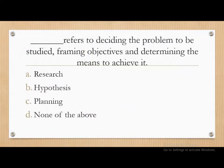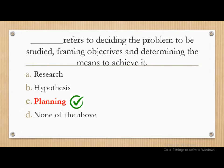Dash refers to deciding the problem to be studied, framing objectives, and determining the means to achieve it — whether it is research, hypothesis, planning, or none of the above. The correct answer is planning. Research planning refers to deciding the problem to be studied, framing objectives, and determining the means to achieve solutions to the problem.